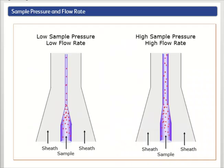The sample pressure must always be greater than the sheath pressure. The sample pressure can be adjusted to increase or decrease the width of the sample core, which can increase or decrease the sample flow rate, or events per second. A wider sample core can increase the event rate because it allows more cells to enter the stream within a given moment.